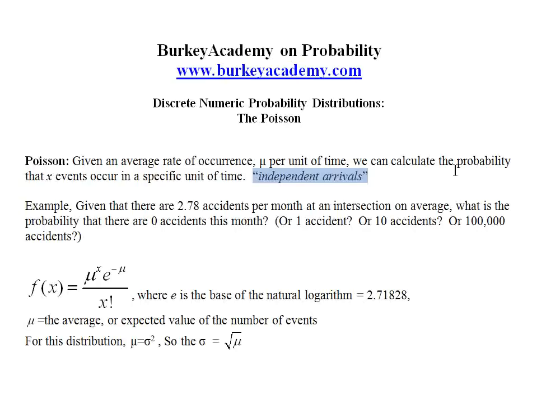So given the fact that one person walks through the door, that does not affect the probability of another person walking through the door. So people are arriving separately or the accidents are not occurring due to another accident, for example.